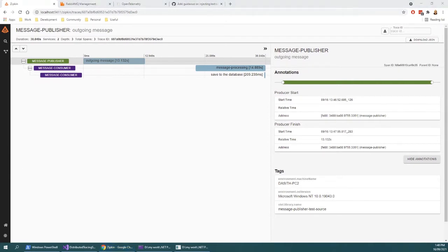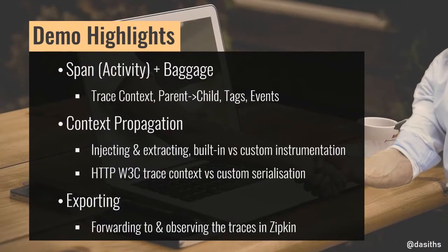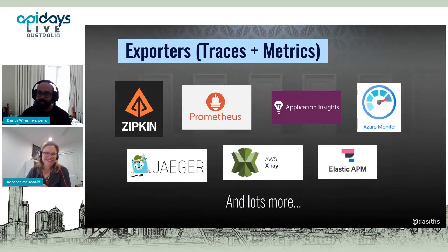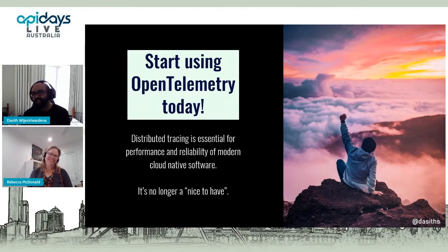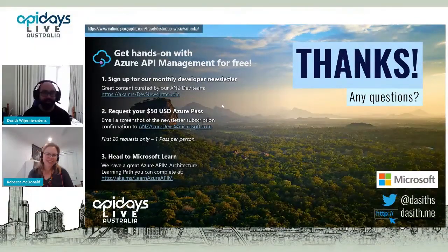In the demo we looked at how to construct a span, how the trace context is propagated, injecting and extracting context, and exporting it. As you can see, it supports a variety of tools to export to. I want everyone to take home and start using OpenTelemetry today — it's no longer a nice to have. You don't have the luxury of being on the cloud without having good observability. It will hit general availability pretty soon, so it's high time you start using this now. I've got a giveaway of $50 in Azure credits for 20 people. Any questions, I'm happy to take them.